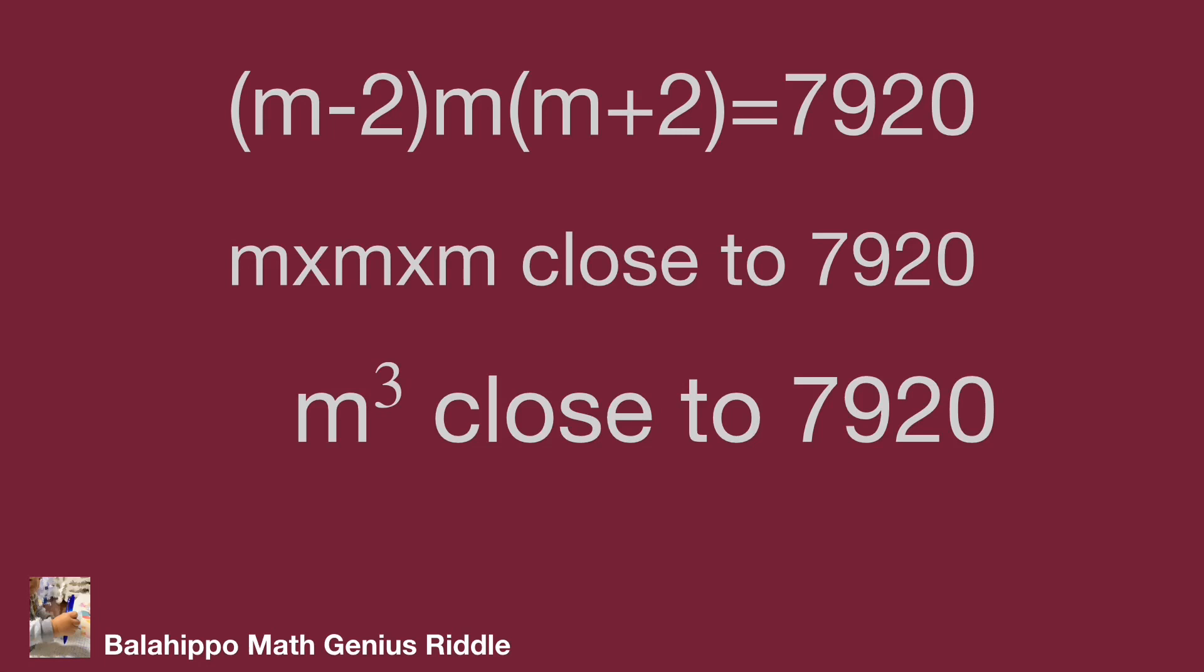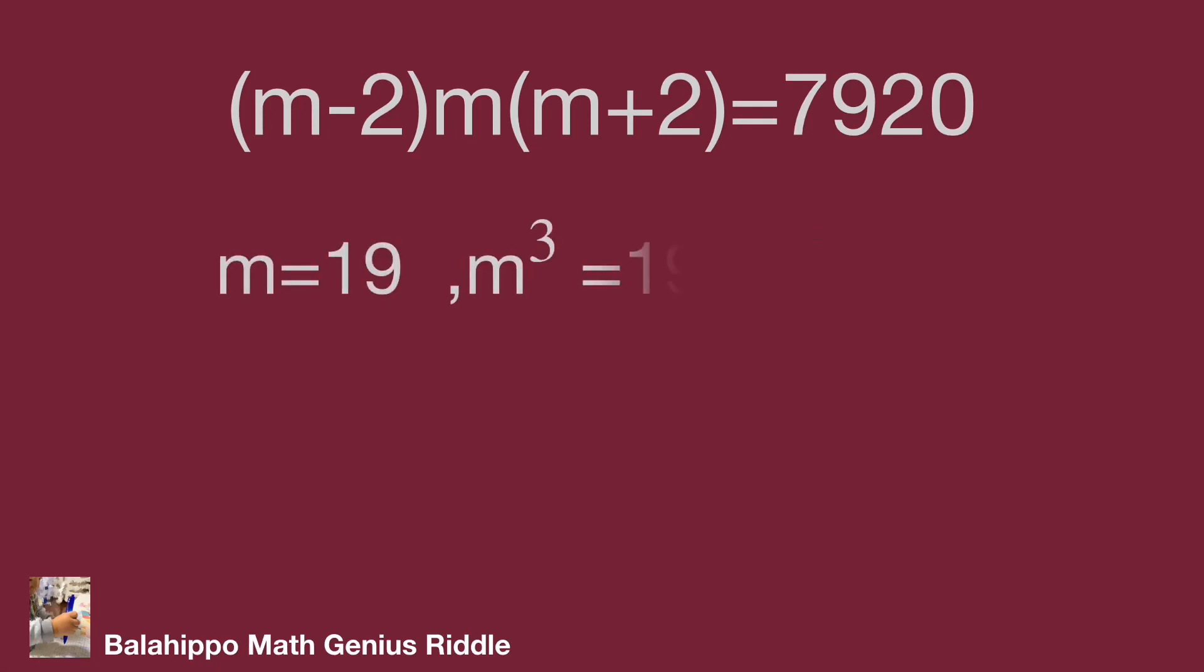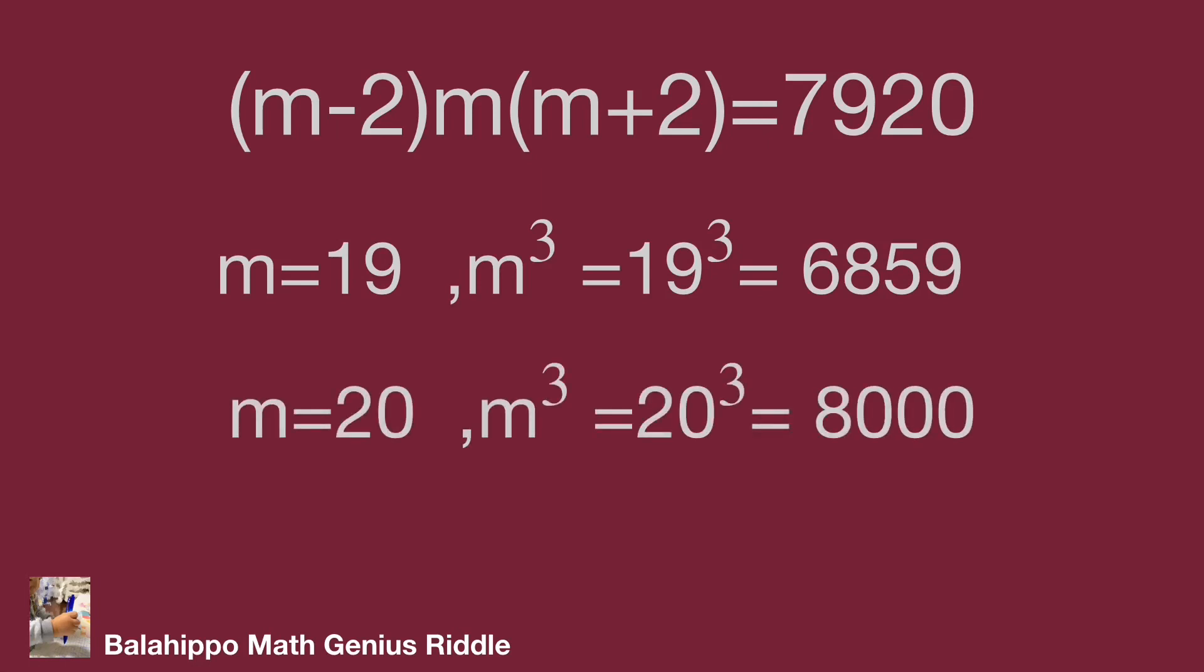Then what's the value of m? Let me quickly estimate. If m equal to 19, then m cubed equal to 19 cubed equal to 6859. If m equal to 21, then m cubed equal to 21 cubed equal to 9261.